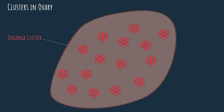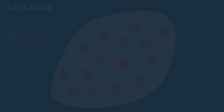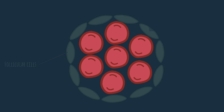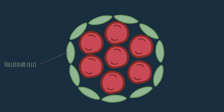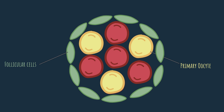Let's take a deeper look at one of these clusters. We can see that the oogonia are surrounded by another type of cell called follicular cells, which play a very important role — we'll get back to them in a moment. The oogonia continue to proliferate inside the clusters through mitosis. Every now and then, some of these oogonia decide to enter meiosis instead. When an oogonium cell enters meiosis, it becomes a cell known as a primary oocyte, which you can see here in yellow. Meiosis is part of the maturation of the oocyte, and once completed, the oocyte is considered to be mature.